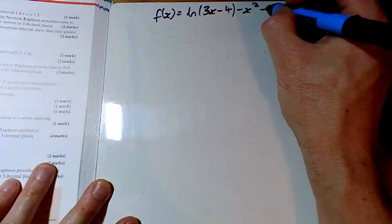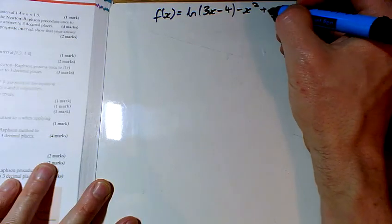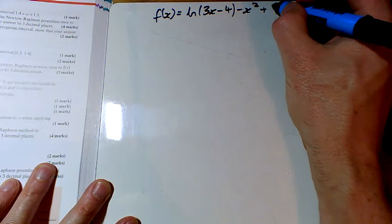The last one, and we've got a ln in this one, ln of 3x minus 4 minus x squared plus 10.